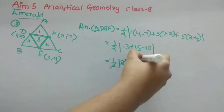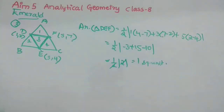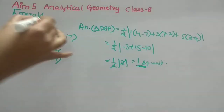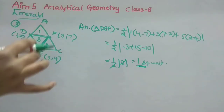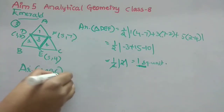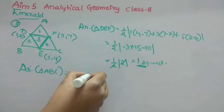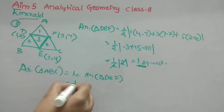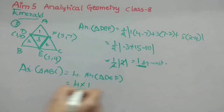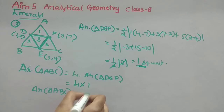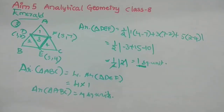Since all four triangles inside ABC have equal area, area of ABC = 4 × area of DEF = 4 × 1 = 4 square units. That is option A.